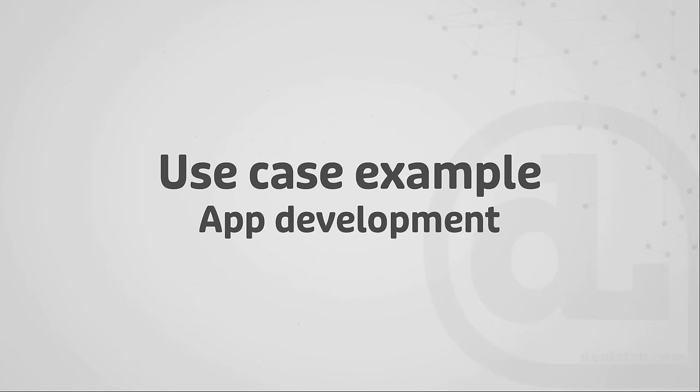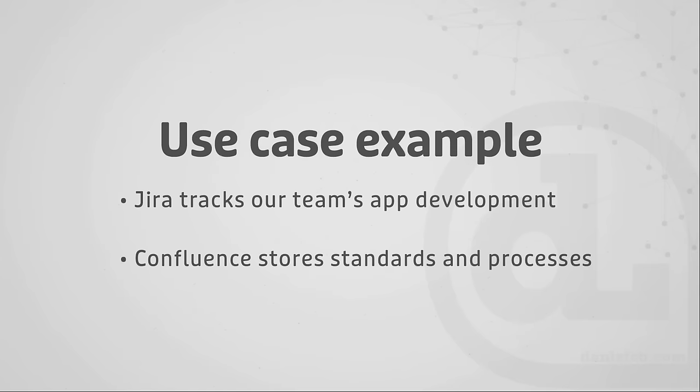A use case example: let's say we're building an app. Jira is going to be where our team tracks that app's development — the current status of different elements like the front-end UI and the back-end development. Whereas Confluence can be where the standards and processes are stored — things like the default naming convention we're going to use on the back end, or the brand logo that we're always going to use. That can be stored in Confluence, which works really well alongside Jira.